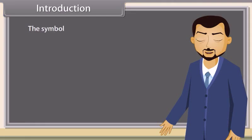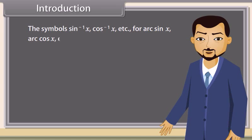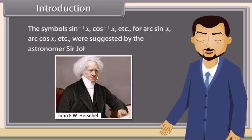The symbols sin⁻¹ x, cos⁻¹ x, etc., standing for arc sin x, arc cos x, etc., were suggested by the astronomer Sir John F. W. Herschel in 1813. Now let's learn about inverse trigonometric functions.